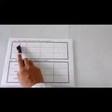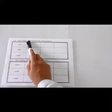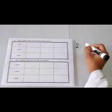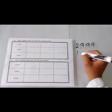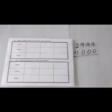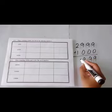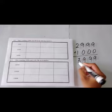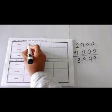Our first number is 2999 and we have to add up 1000 into this number. We have 2999. Let's add 1000. 9 plus 0, 9. 9 plus 0, 9. 9 plus 0, 9. And 2 plus 1, 3. So the next number is 3999.